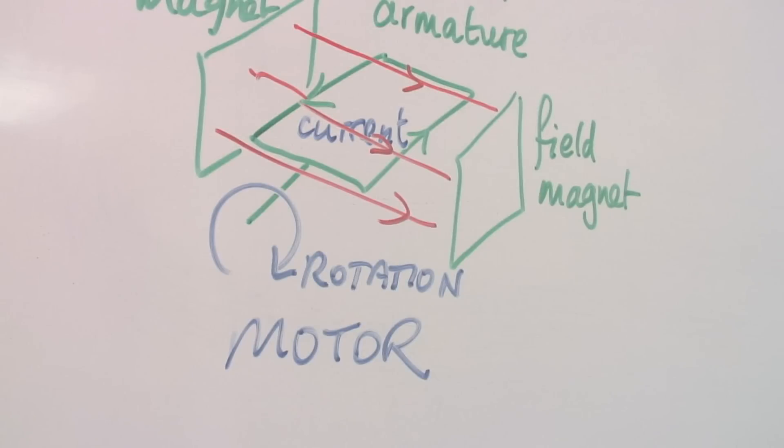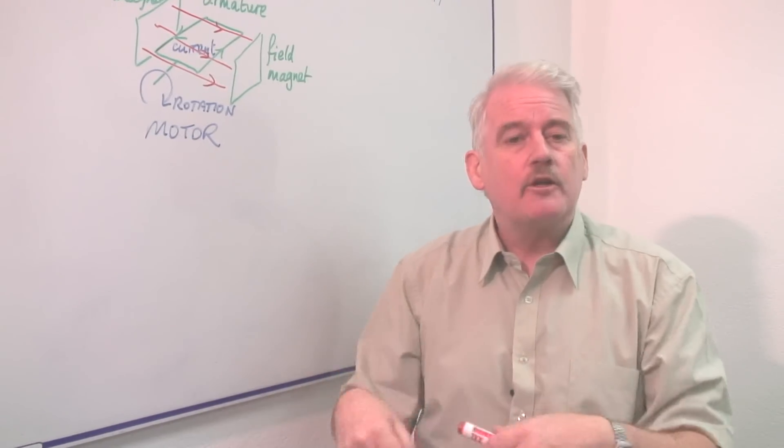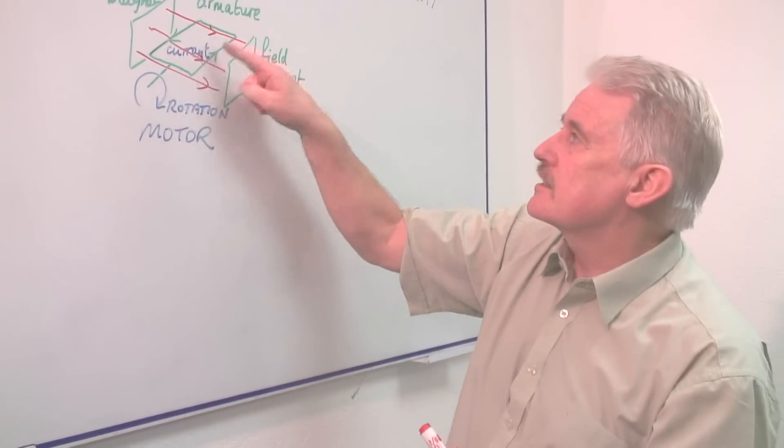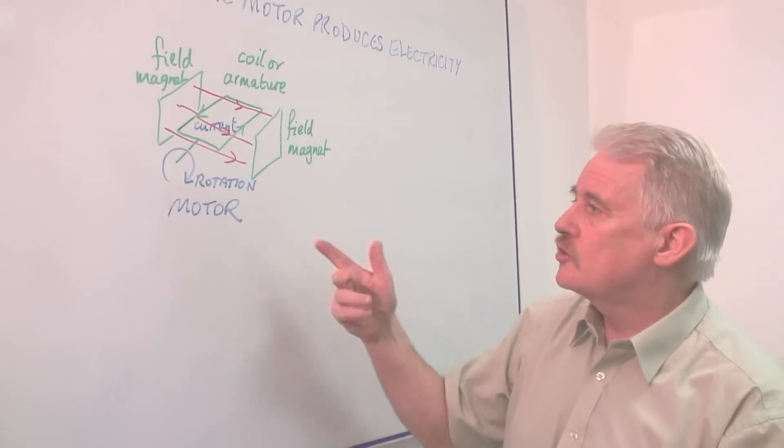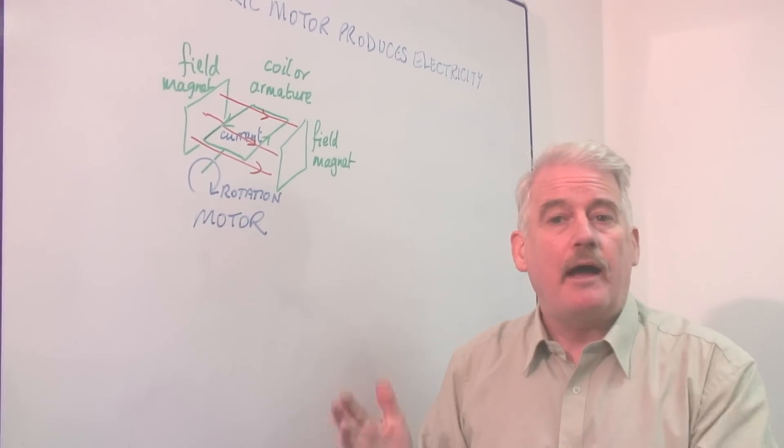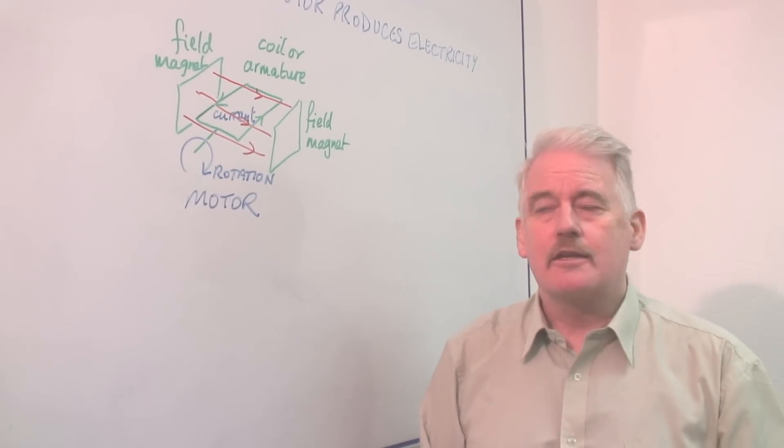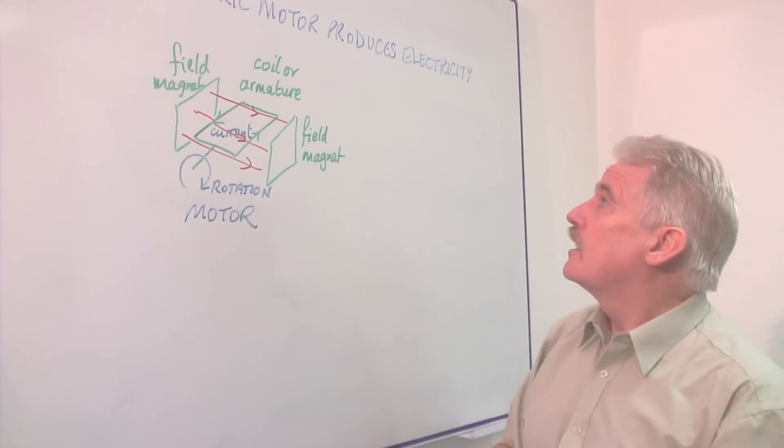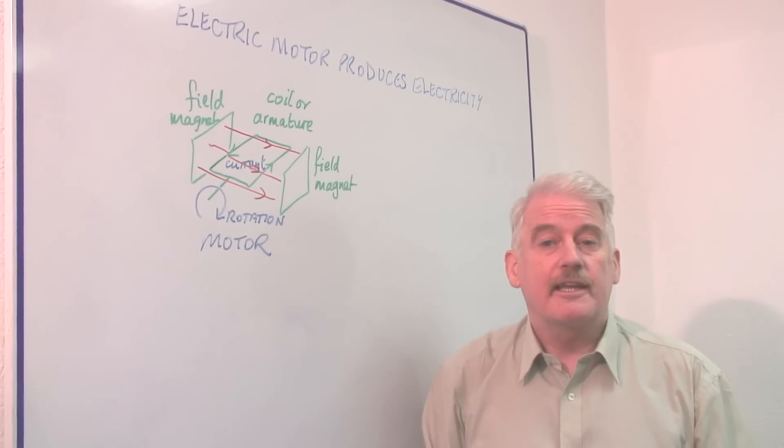So, there is in fact no difference in construction. All I have to do is rotate it, find a way of rotating this central coil or armature, and then attach it to whatever I want to power using my little generator. So, that's how to use an electric motor to produce electricity.